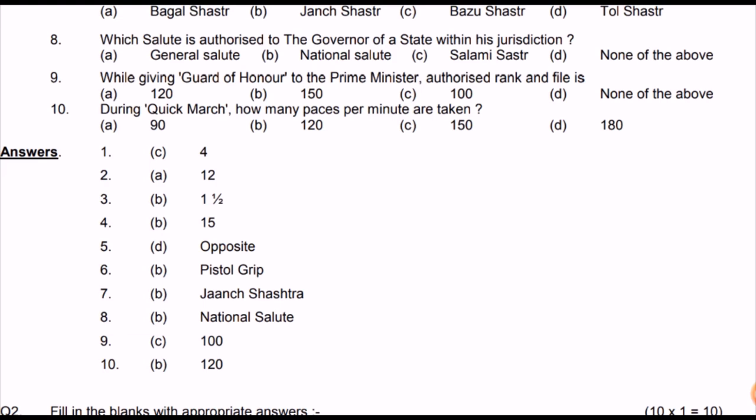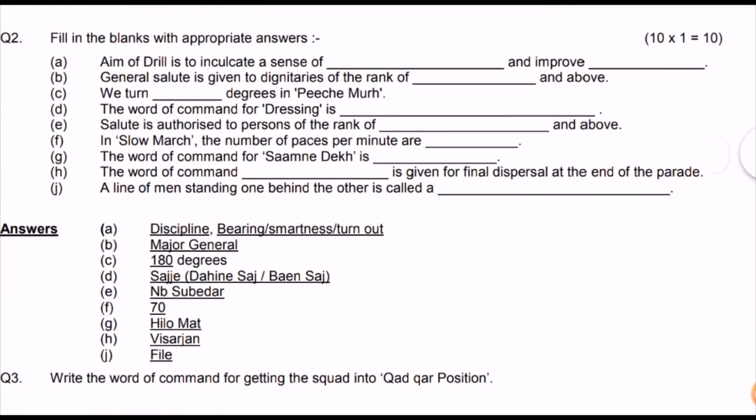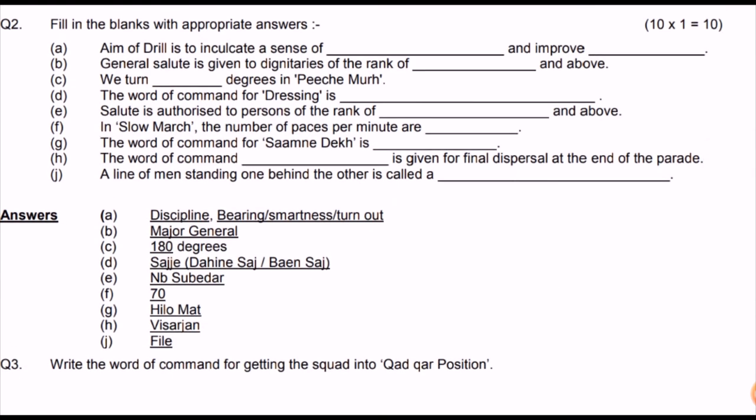Question ten: during quick march, how many paces per minute are taken? There are three types of marches: slow march (60-70 steps per minute), quick march (120 steps per minute), and double time march (180 steps per minute). Moving ahead — fill in the blanks: the aim of drill is to inculcate sense of discipline, bearing, smartness, and to improve our turnout.